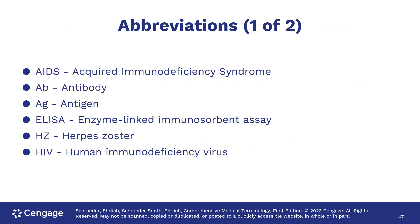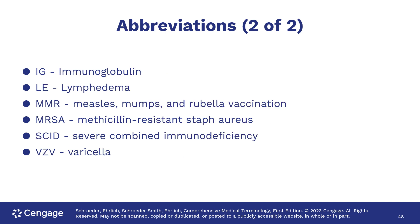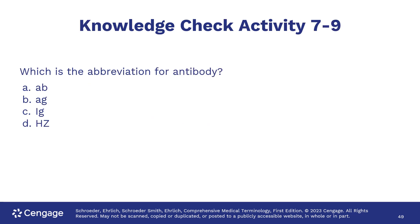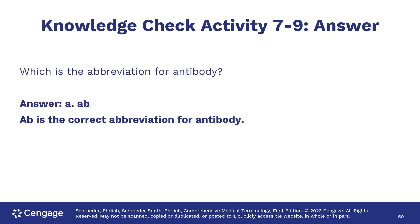Here is the list of common abbreviations. The abbreviation for antibody is AB — of course, nothing else in that list makes sense.